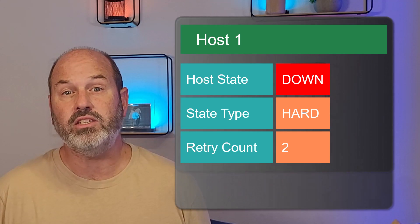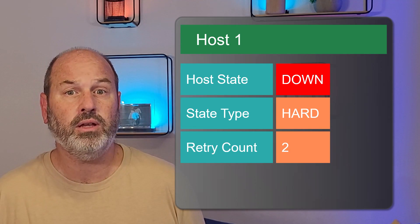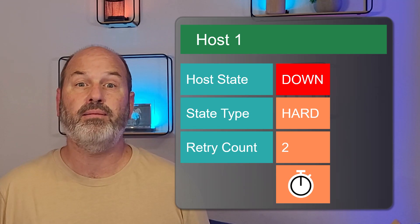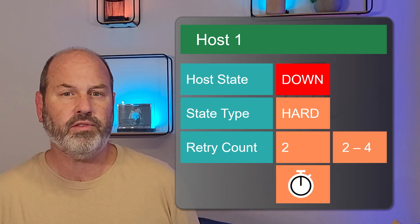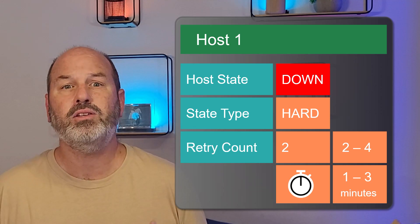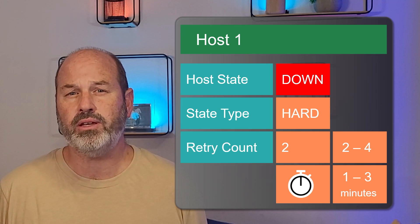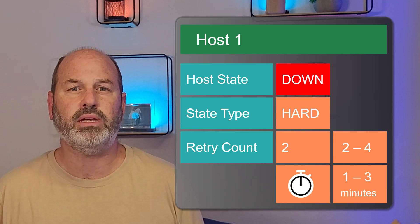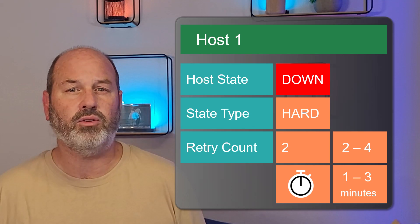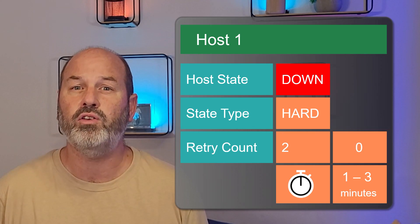This approach lets us change two parameters: how many times we repeat the retry procedure, and how much time to let pass between retries. IT admins can modify both of these parameters. Typical values are two to four retries and one to three minutes between retries. It's a trade-off between how quickly you want to take action after a potential problem is noticed and how sure you want to be that it's not a false positive. If you're monitoring extremely critical services, you may actually want zero retries so that no matter what, you're notified immediately.